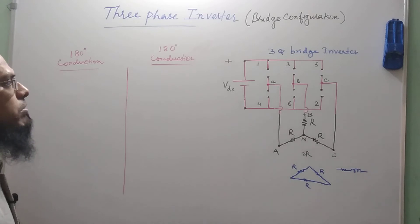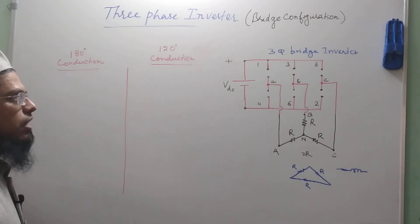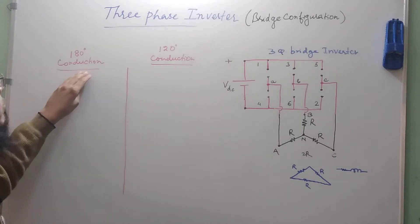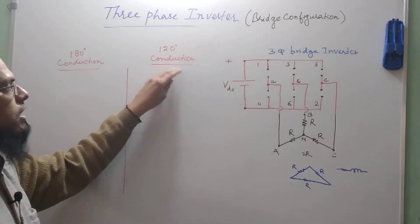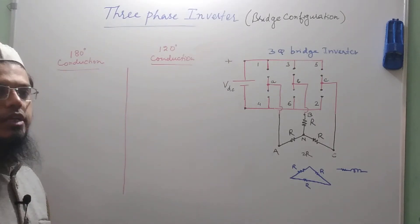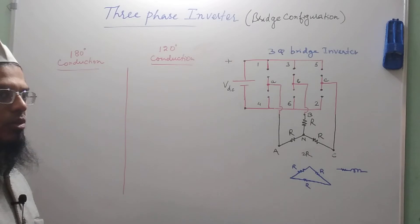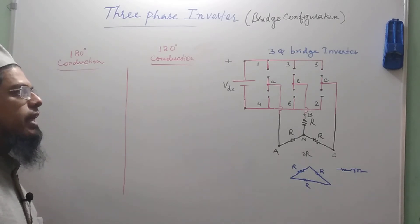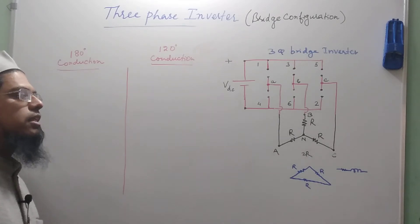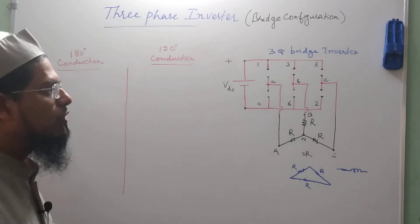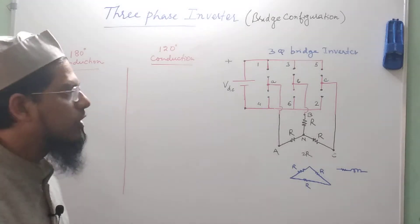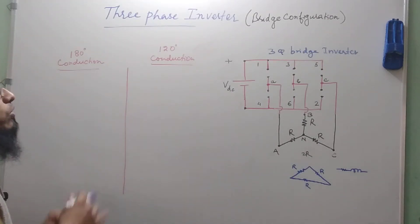The operation of the three-phase bridge inverter can be classified into two modes: one is called the 180-degree conduction mode and the second one is called the 120-degree conduction mode. The basic difference between the two modes lies in the duration of conduction for each of the switches. Let me compare the two modes of conduction in the three-phase inverter.